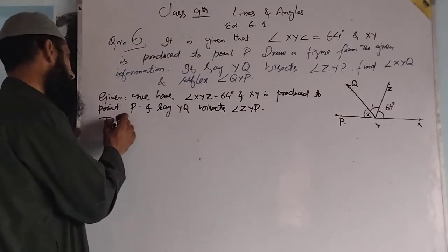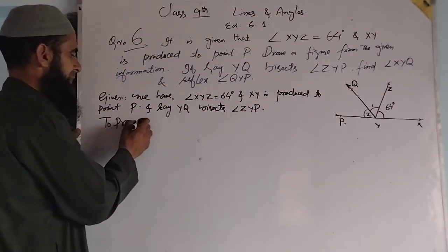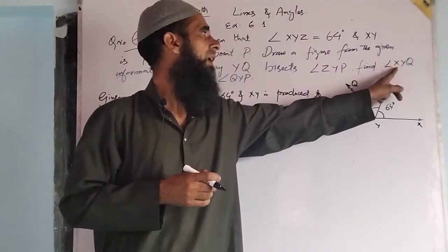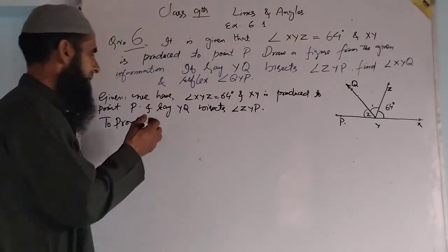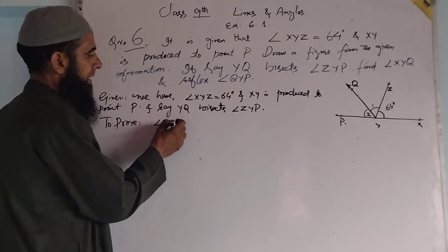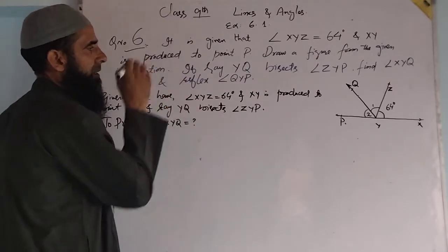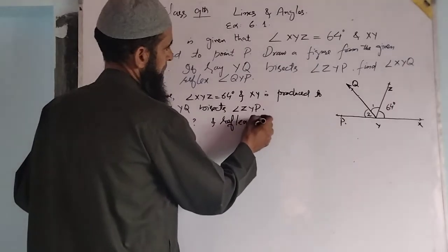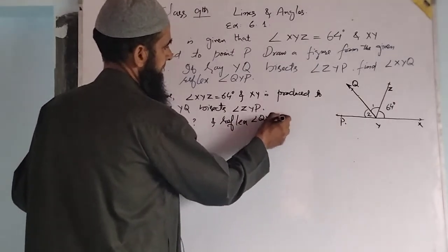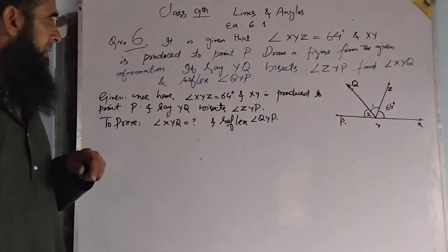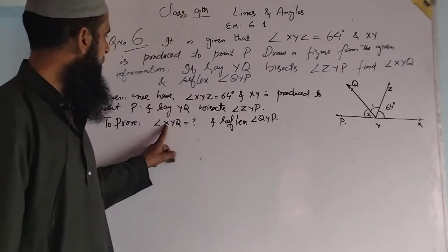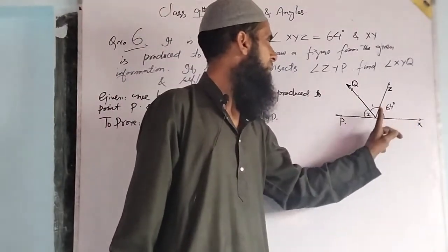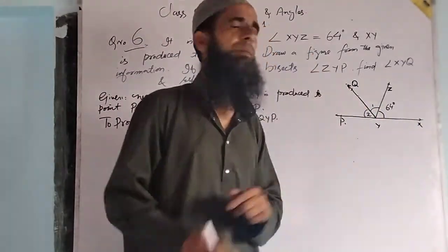Now, what do we have to prove? Dear students, we have to find angle XYQ — let us see what it equals. And second, the reflex angle QYP. Let us first find angle XYQ. We have angle XYZ equal to 64 degrees. If we get angle 1, then we can get the required angle.